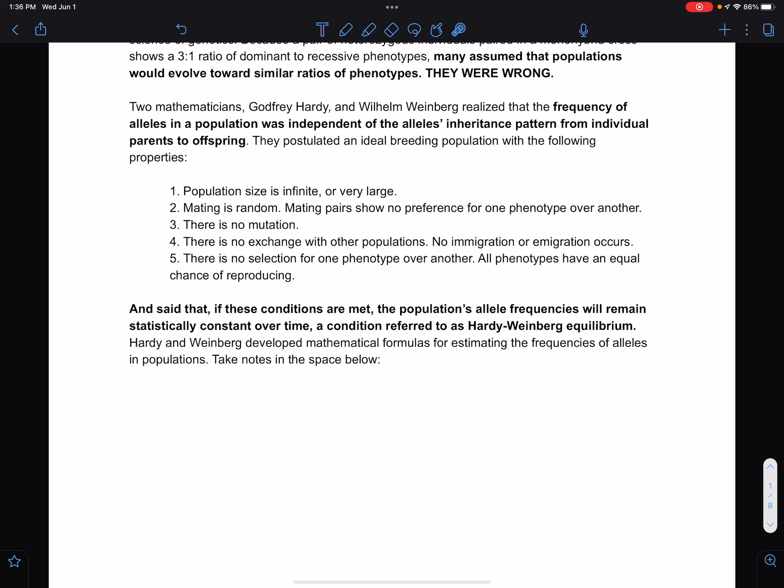All phenotypes have an equal chance of reproduction under these conditions, which we know these things are not true. These things are often violated. But if these things are true, then we'd expect allele frequencies to remain statistically constant over time, which is a condition we call Hardy-Weinberg equilibrium.